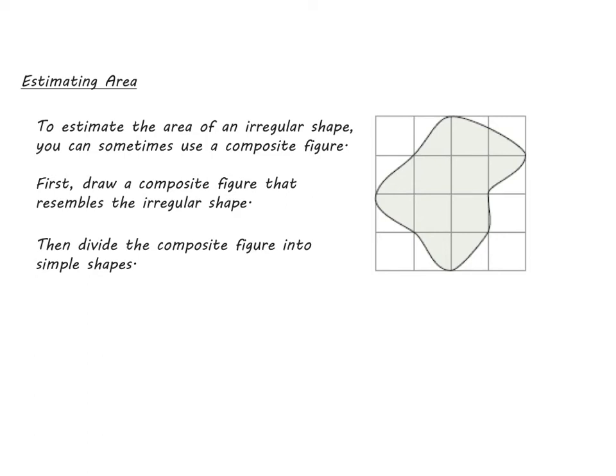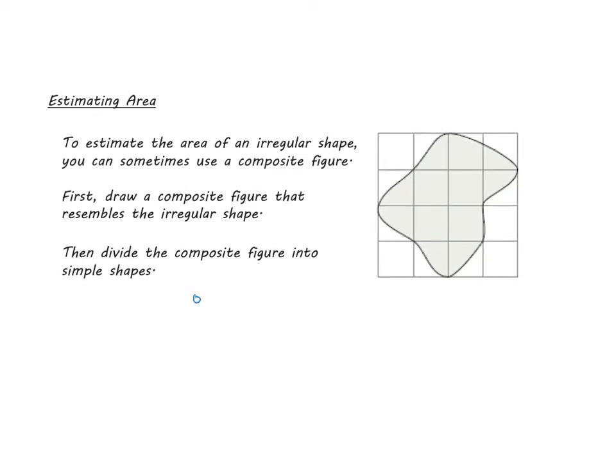Hey guys, in this video we're going to be estimating the area of these irregular shapes. The textbook tells us we can use composite figures and try to represent this blob using other shapes, or we could just count the squares. We can count the whole squares and half squares too. I personally like that method a lot better, so in this first example let's do that.